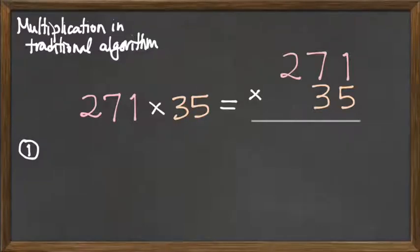The first product that we end up doing is one times five. Let me highlight that. The first product ends up being one times five. That gives me five.